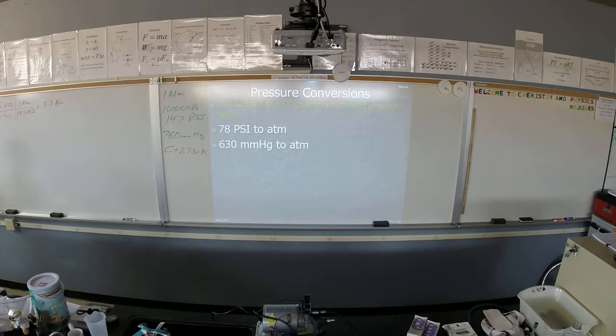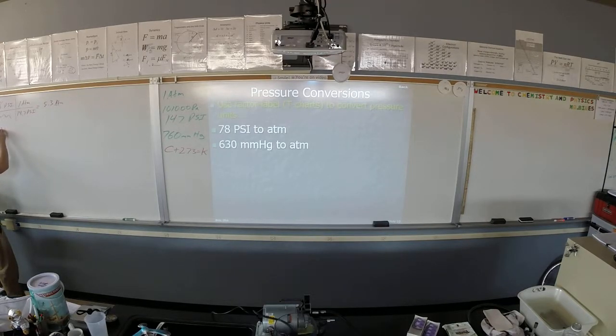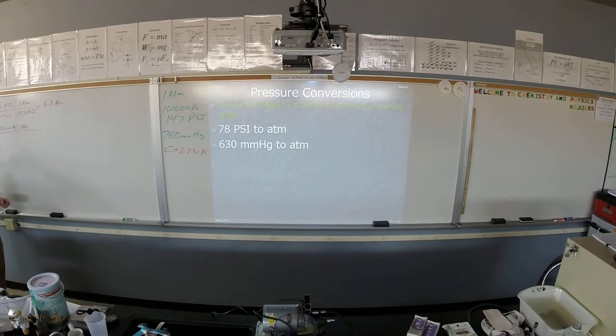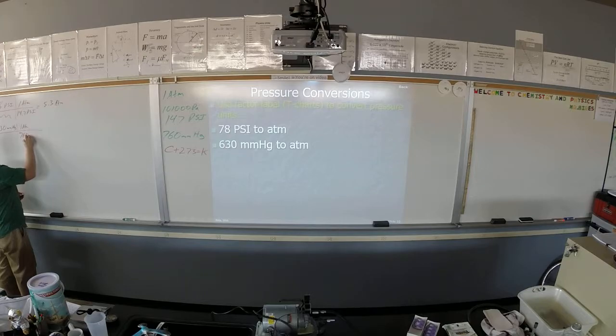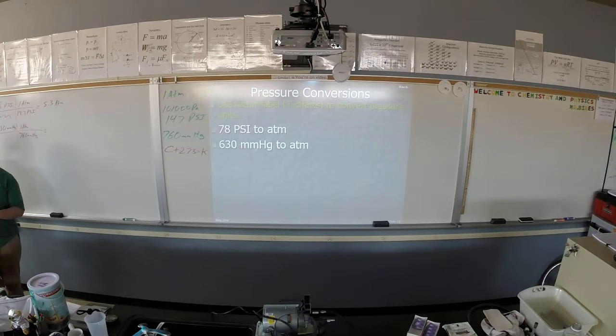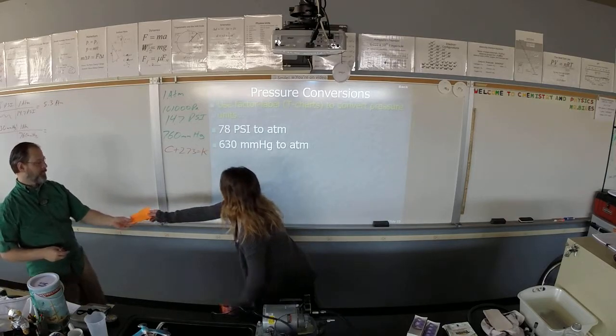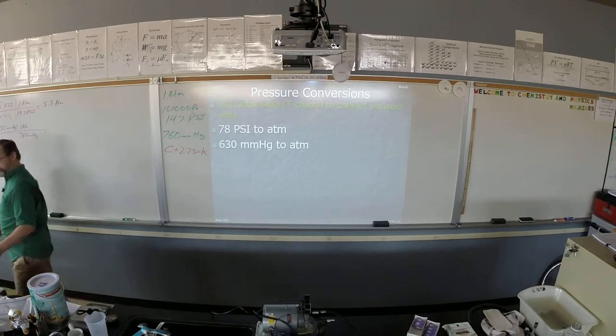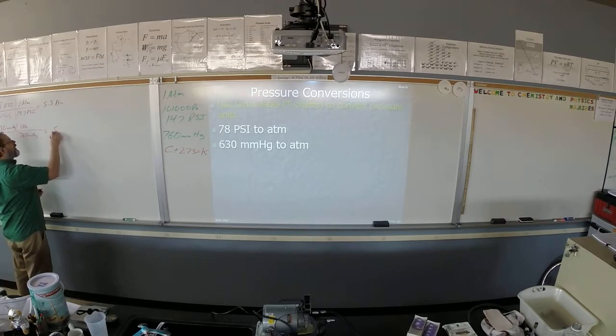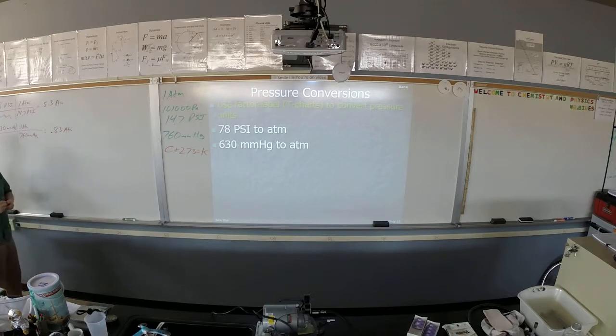630 millimeters of mercury to atmospheres—start the same way. 630 millimeters of mercury, and we're converting to one atmosphere. In one atmosphere how many millimeters of mercury are there? 760 millimeters of mercury. Did I give you a good enough analogy to understand what the millimeter of mercury is? The millimeter of mercury is how much liquid mercury can be driven up a glass tube when the atmosphere pushes down. 0.83 atmospheres.